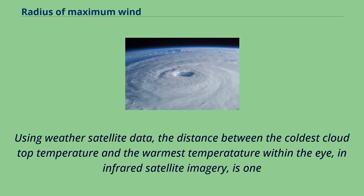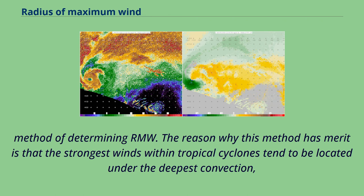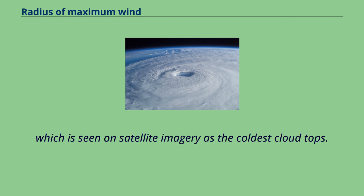Using weather satellite data, the distance between the coldest cloud top temperature and the warmest temperature within the eye in infrared satellite imagery is one method of determining RMW. The reason this method has merit is that the strongest winds within tropical cyclones tend to be located under the deepest convection, which is seen on satellite imagery as the coldest cloud tops.